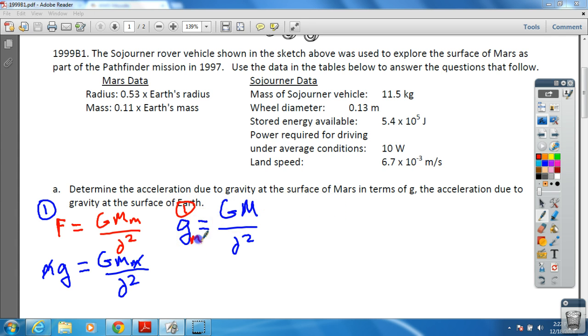Remember this is all for Mars, so we're going to put M subscripts. But the problem is they gave us the radius and the mass of Mars based on the Earth radius and the Earth's mass. So let's just remember that gravity on the Earth is dependent upon big G times the mass of the Earth over the radius of the Earth squared.